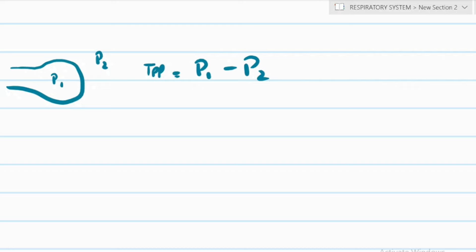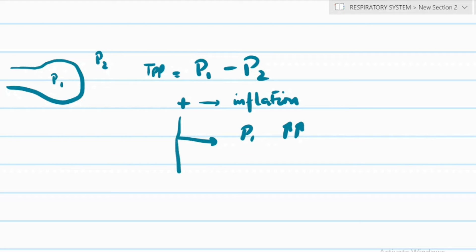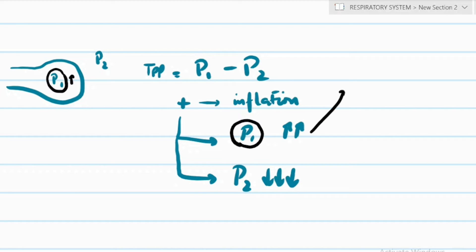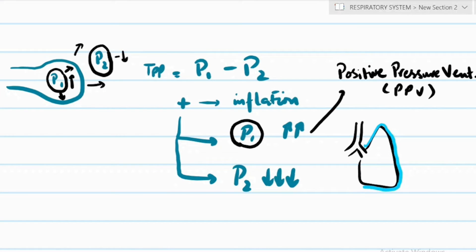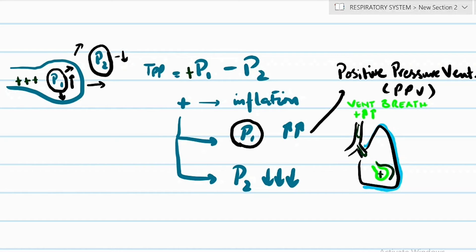Drawing the alveolus again with inner pressure P1 and outer pressure P2: when trans-pulmonary pressure (P1 minus P2) is positive, the alveolus inflates. We can make it positive by either increasing P1 or decreasing P2. In a ventilated patient on a neuromuscular blocker, the ventilator increases P1 — the positive pressure inside the alveoli increases — and that is how a ventilator breath works, causing the alveoli to expand.